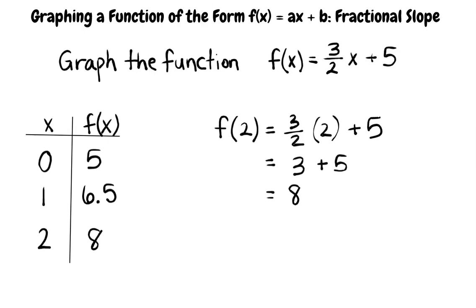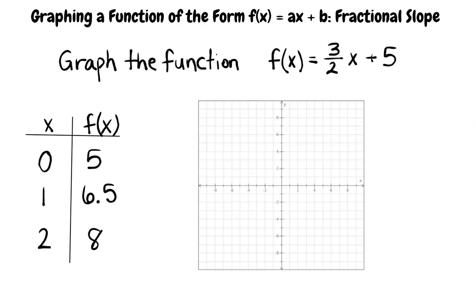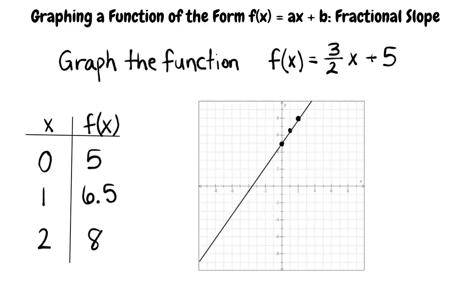That's correct. Now we plot the points on the coordinate plane. Let's plot each point. First, 0, 5. Next, 1, 6.5. And last, 2, 8. After plotting the points, we make sure that a line can be drawn through them.